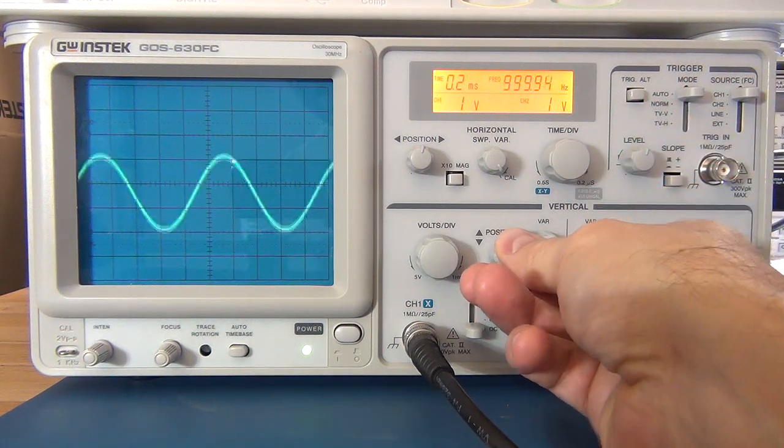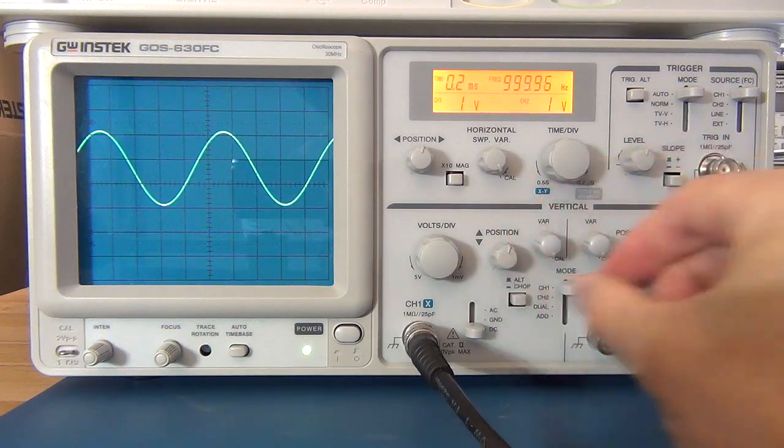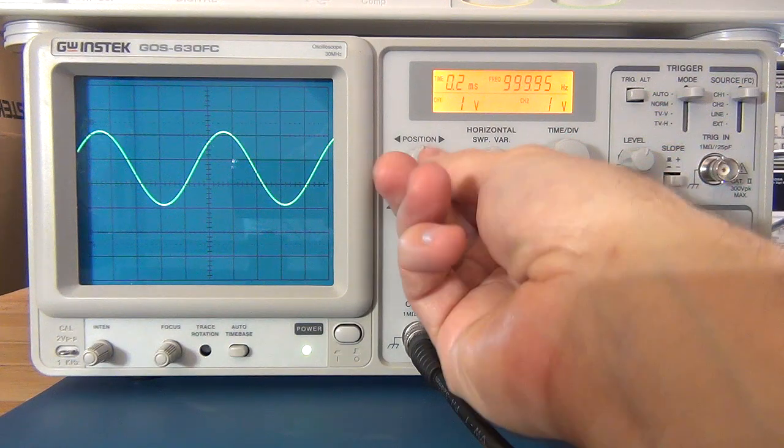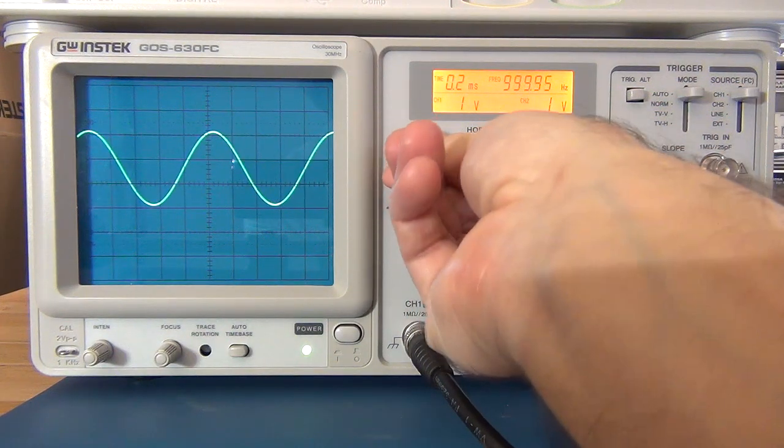You've got your standard knobs where you can change your vertical position on the display. If we go to the time base over here, you can change the horizontal position of the signal that you're looking at as well.